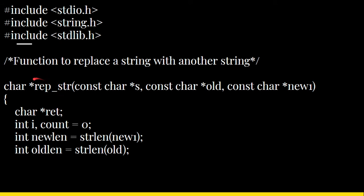The function name is rep_string and it returns a character pointer. It has three arguments: const char *s, const char *old, and const char *new — all character pointer variables.